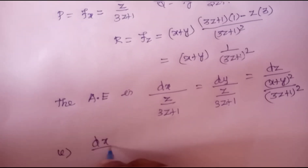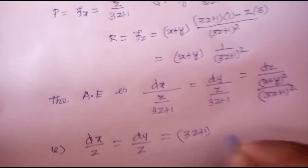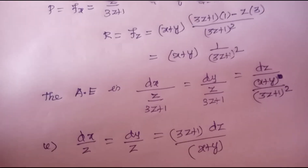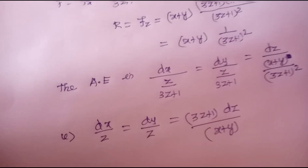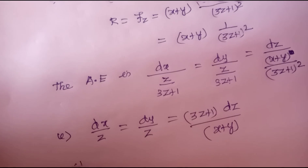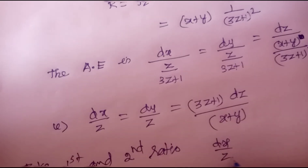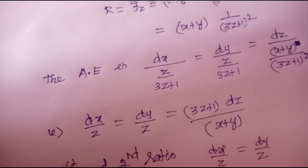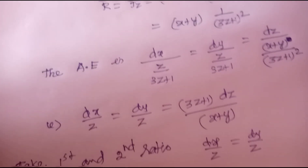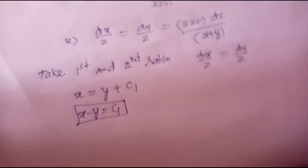This equation can be written as dx/z = dy/z = (3z+1)dz/(x+y). Solving by grouping method — taking the first two ratios: dx/z = dy/z. Cancelling z, we get dx = dy. Integrating both sides: x - y = c₁. This is the first solution.